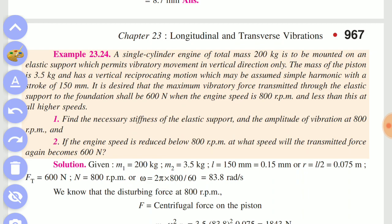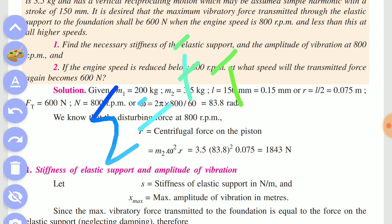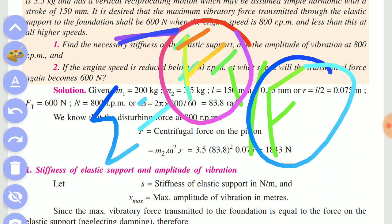So it is very simple. First, find the stiffness using the transmissibility formula: transmissibility equals Ft divided by F. We have a formula — Ft by F. From the question, the Ft value is 600 N. The exciting force F is M1 times omega squared times r.